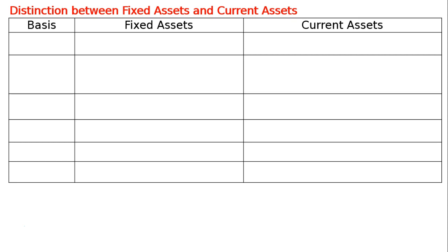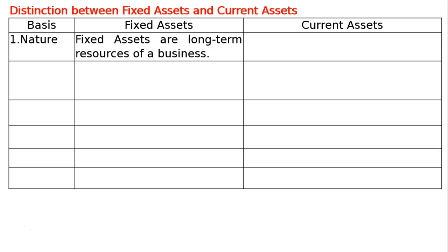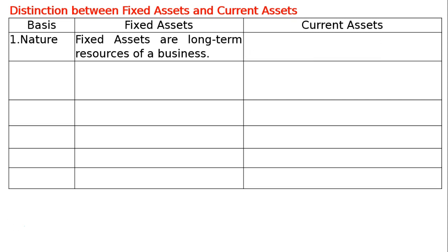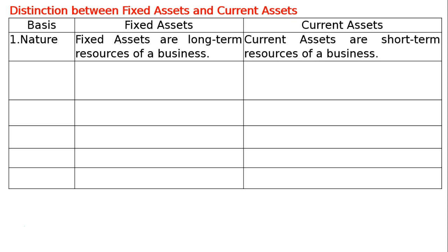The first basis of distinction is Nature. In case of Fixed Assets, Fixed Assets are long-term resources of a business. Whereas in case of Current Assets, the nature is that Current Assets are short-term resources of a business.